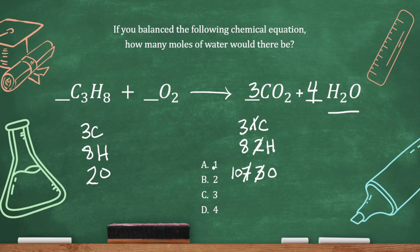And so to make ten oxygen on this side, I'm going to put a five right here. And now we're totally balanced. So how many moles of water are there? Four. So our answer is D.